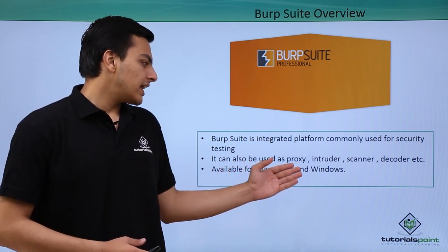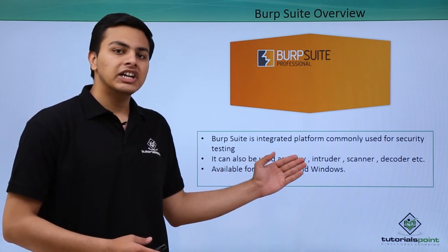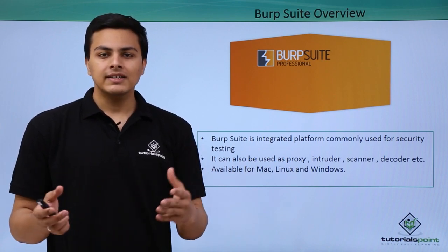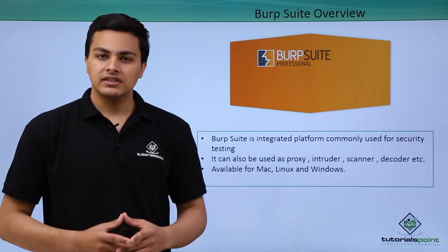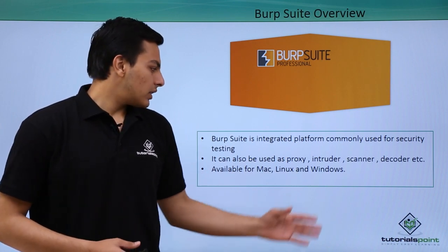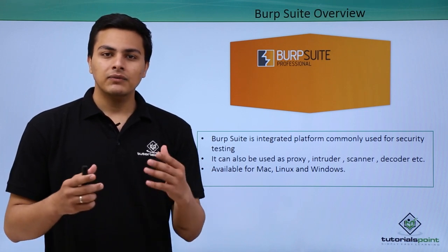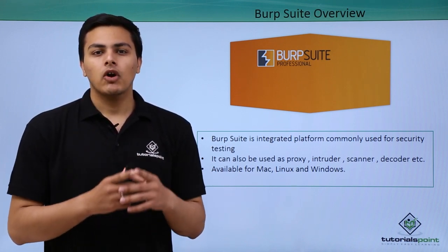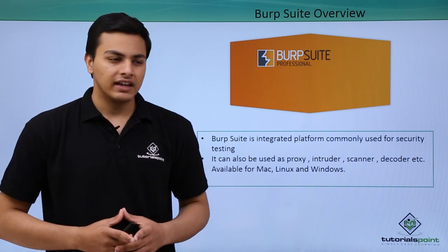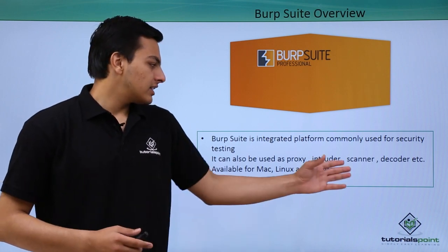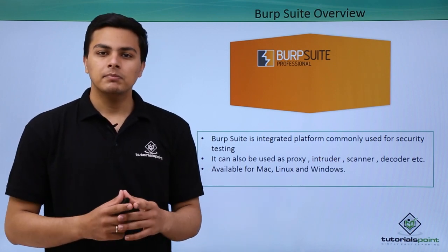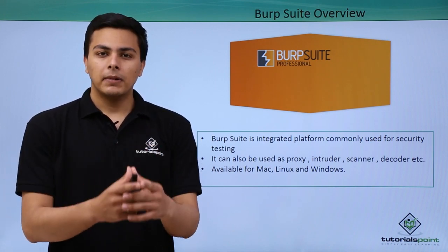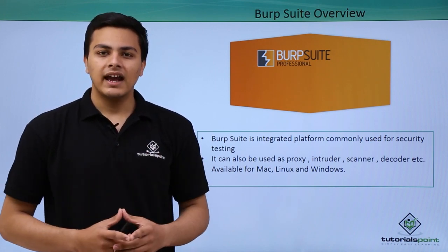Burp Suite contains tabs like proxy, intruder, and scanner. The proxy tab is used for intercepting our requests — it's a proxy function. The intruder tab contains different attacks which we can perform on a remote website, like dictionary attack, brute force attack. The scanner tab is used for scanning a particular website and its vulnerabilities.